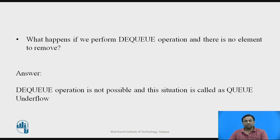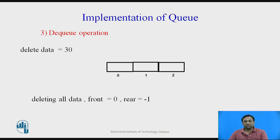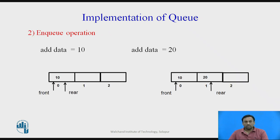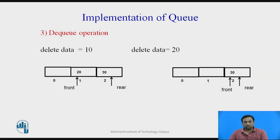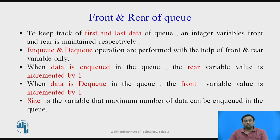In the same manner, if you perform a dequeue operation when there are no elements in the queue, the dequeue operation is not possible. This situation is called queue underflow. If after deleting 30 the front pointer and rear pointer are pointing towards 0 and minus 1 respectively, and you try to delete again, it shows a message that the queue is in underflow condition and you cannot delete elements. That is why while doing a dequeue operation we have to check the is-empty condition.